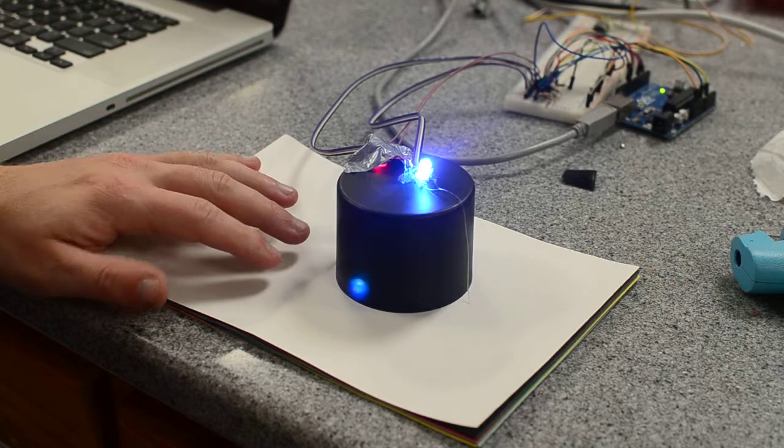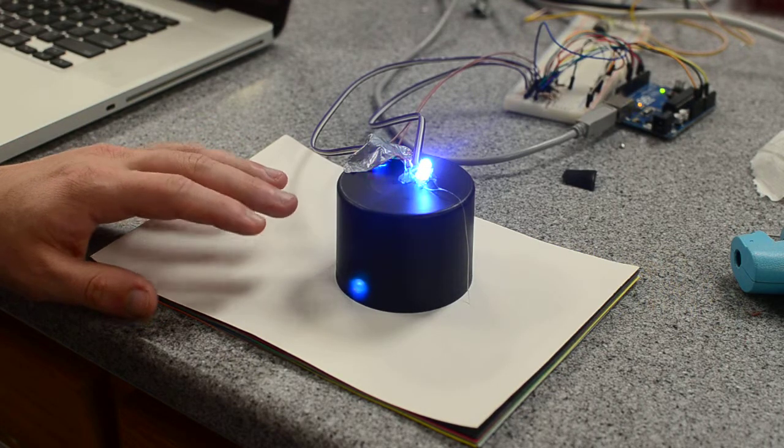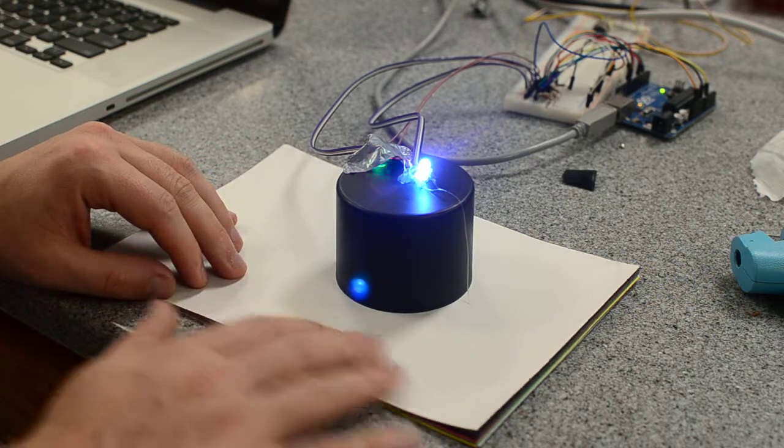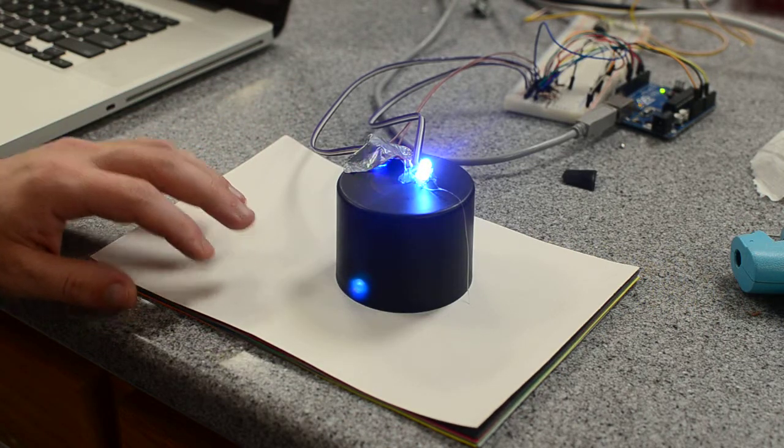Okay, so this is the Arduino chameleon, and what it does is it uses a variety of LEDs and sensors to tell what the color of the surface that it's resting on is.